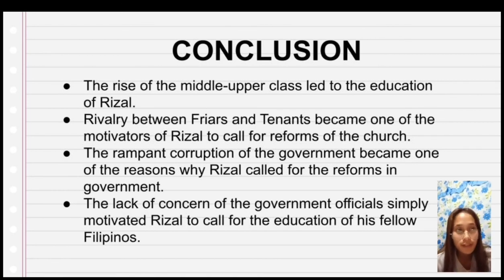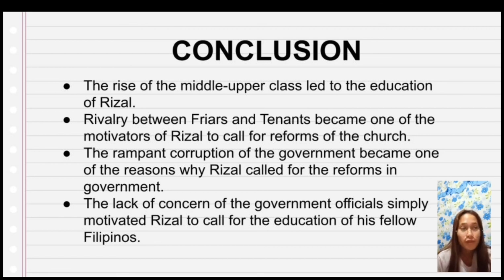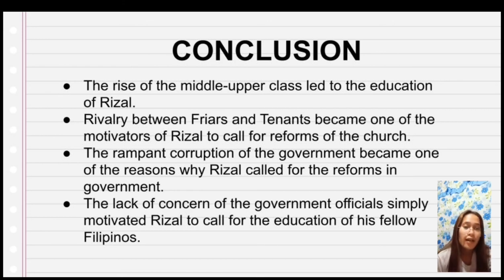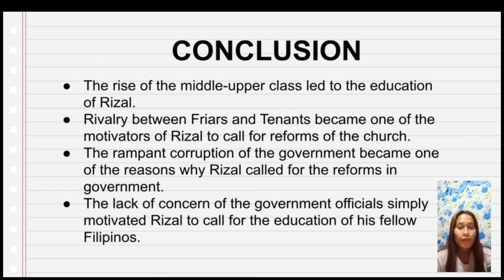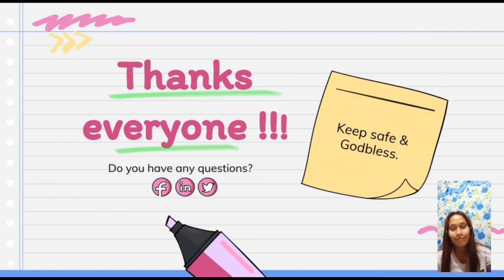In conclusion, the rise of the middle and upper class led to the education of Rizal. The rivalry between friars and tenants became one of the motivators for Rizal to call for reforms of the church. The rampant corruption of the government became one of the reasons why Rizal called for reforms in government. And the lack of concern of government officials simply motivated Rizal to call for the education of his fellow Filipinos. Thank you for listening; that's the end of the discussion.